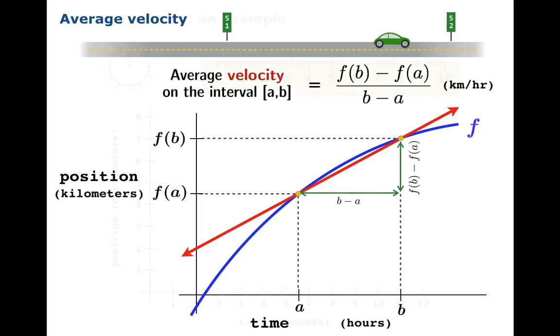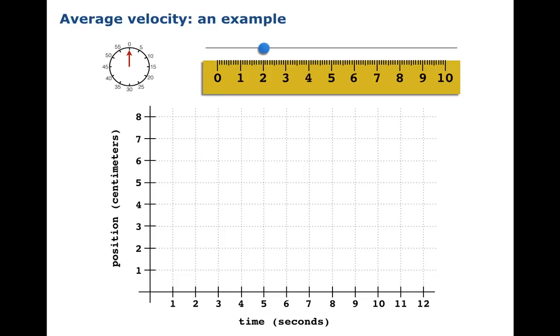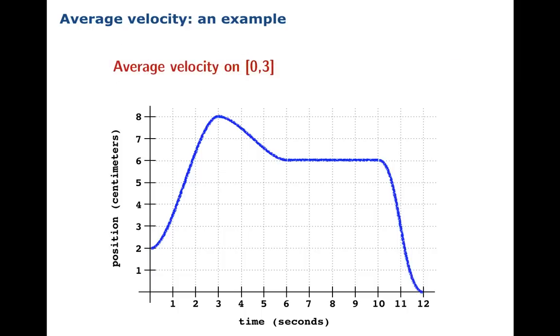Let's take a look at an example. We've got a bead on a rod sliding along, with position in centimeters marked by a ruler, and we're going to watch the bead move for 12 seconds. It starts traveling to the right, turns around, drifts to the left, maybe stalls out for a few seconds, and then makes a spurt to the left to end. On the interval from 0 to 3, the change in position was 6 units and the change in time was 3 units, so the average velocity turns out to be 2 centimeters per second.